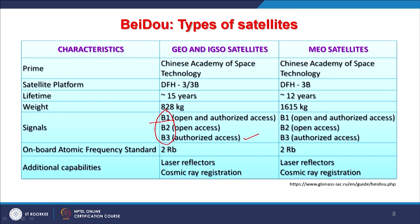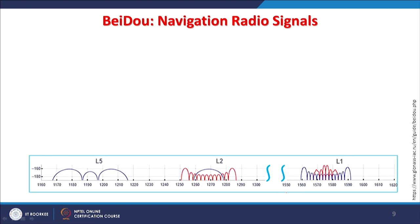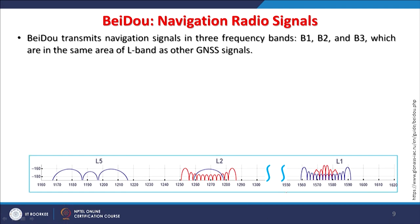The on-board atomic frequency standard used is 2RB, identical in all three types of satellites. Additional capabilities across all satellite types include laser reflectors, cosmic ray registration, and other instruments — as each country is trying to have multipurpose satellites that can be exploited not only for navigation but for other purposes as well. BeiDou transmits navigation signals in three frequency bands — B1, B2, and B3 — which are in the same L-band area as GPS L1, L2, and L5, though the specific frequencies differ.